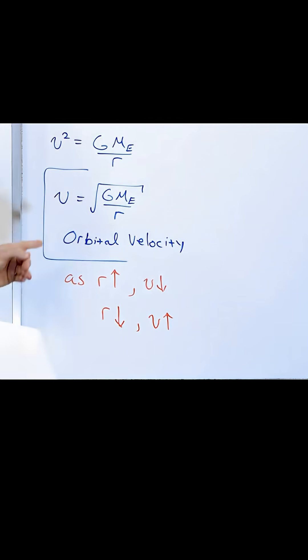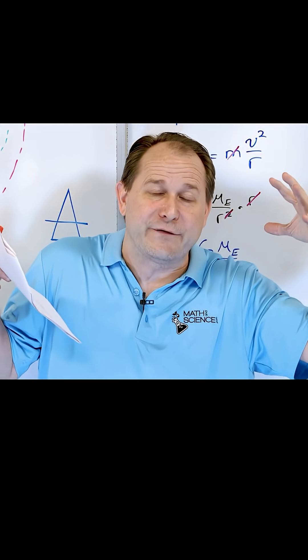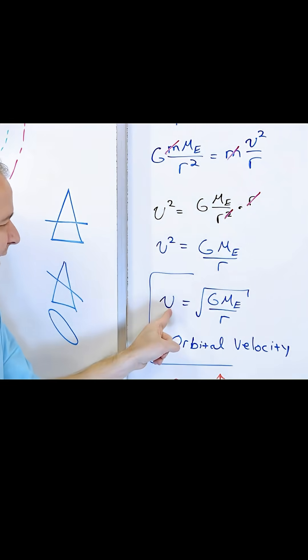What this tells you is something really fascinating. In order to orbit around Earth very close to the surface, I need to be going much, much faster. Because if I put in an orbital radius smaller, then I'm dividing by a smaller number and the orbital speed has to be very fast.